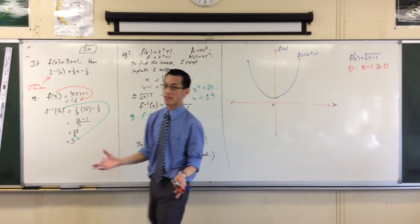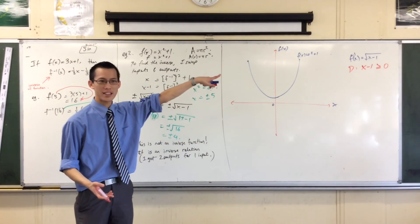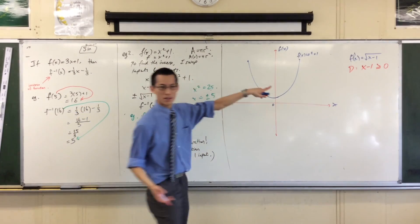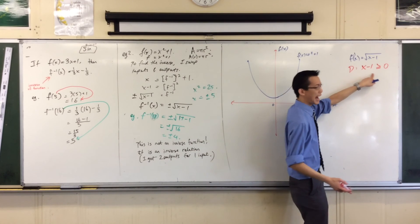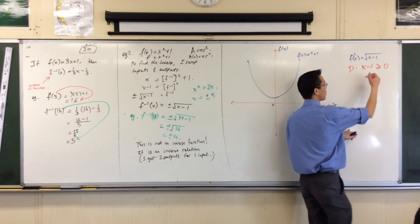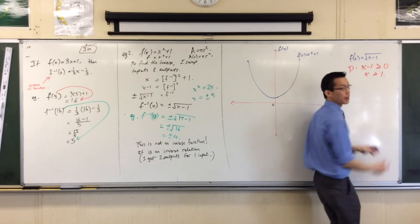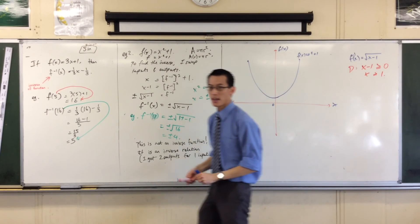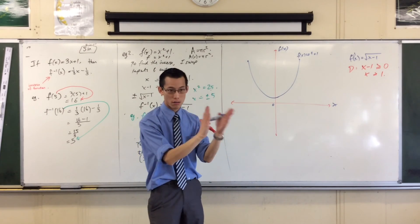Alright. So, x minus 1 is greater than or equal to 0. You could solve that. That's really easy to solve. What do I do? I just add 1 to both sides, don't I? So, I'll get x greater than or equal to 1. There's my domain. So, that's where I can go horizontally.